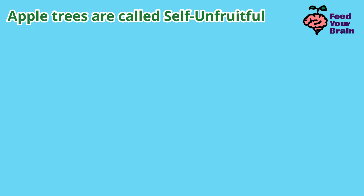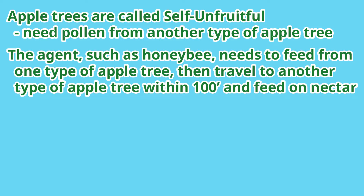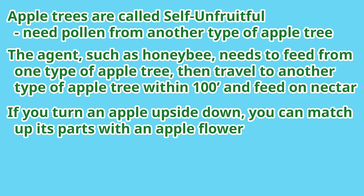Apple trees are called self-unfruitful because they need pollen from another type of apple tree. The agent, such as a honeybee, needs to feed from one type of apple tree, then travel to another type of apple tree within 100 feet and feed on nectar. If you turn an apple upside down, you can match up its parts with an apple flower.